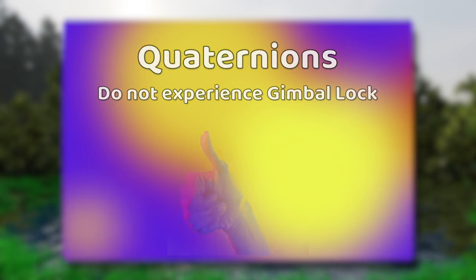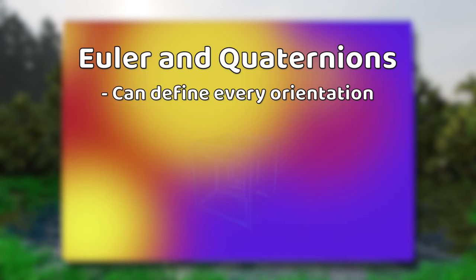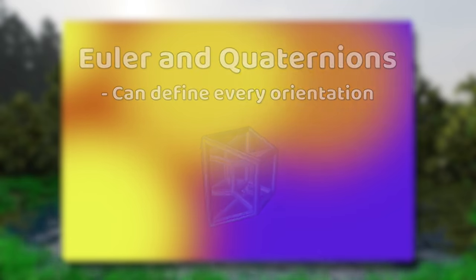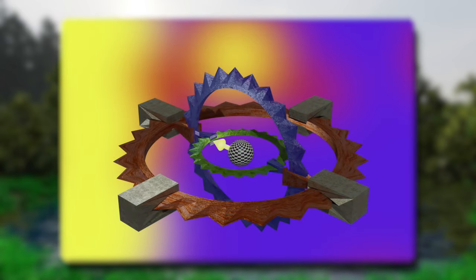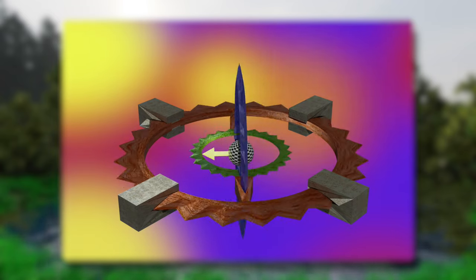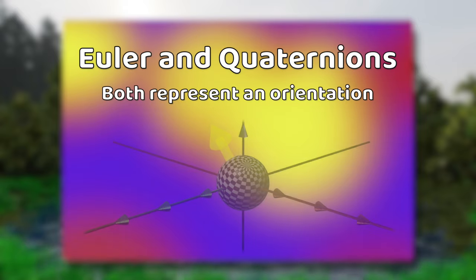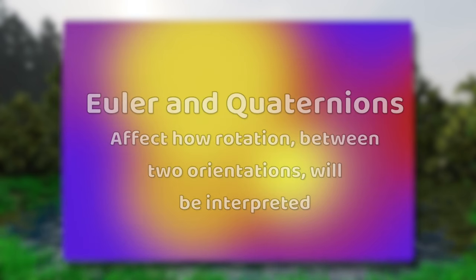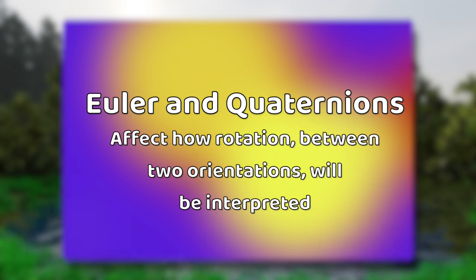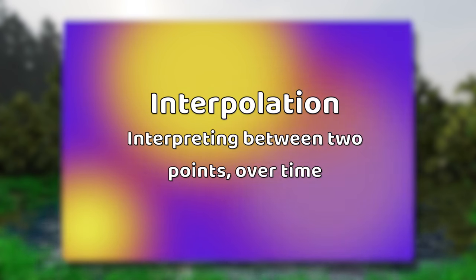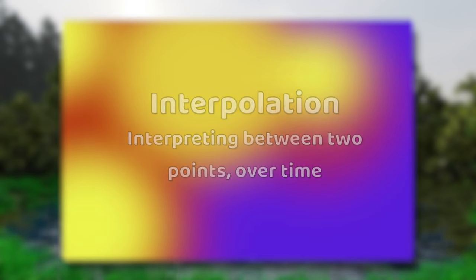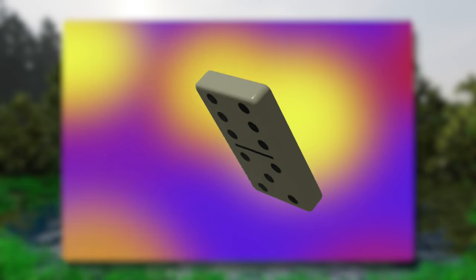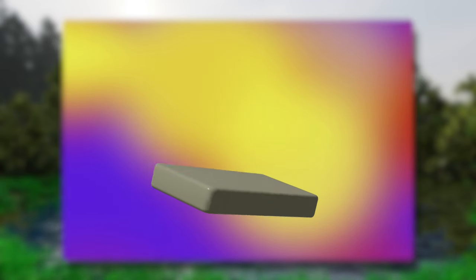As we have seen so far, Euler values and Quaternions can both define every orientation. Quaternions do it with 4D math — that's sort of hard to visualize. Euler values have an easier-to-visualize concept. Whether we use Euler or Quaternions, they both result in an orientation. It's common to take multiple orientations and animate the changes between them, and Euler and Quaternion values affect how the rotation between two orientations will be interpreted.